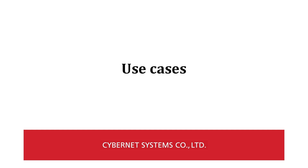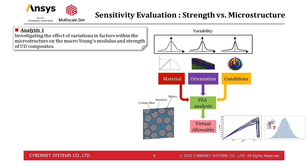I will now present examples of analysis where a big material database has been constructed by virtual material testing. The first is a sensitivity assessment of a unidirectional fiber-reinforced composite, or UD composite for short — a material reinforced by fibers aligned in one direction with resin as a matrix. The aim is to investigate the influence of factors with variations within the microstructure on the apparent Young's modulus and the strength of UD composites. Composites are well known to be prone to variations in their properties, mainly due to variations within the microstructure.